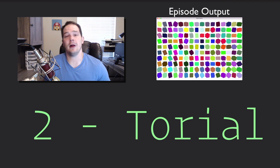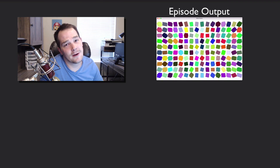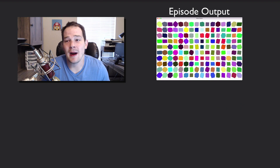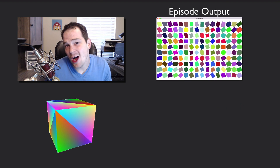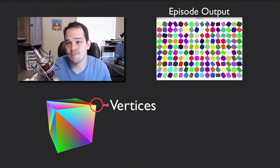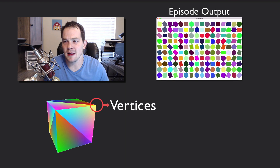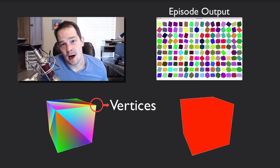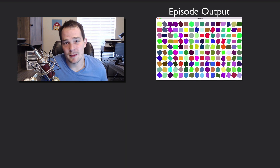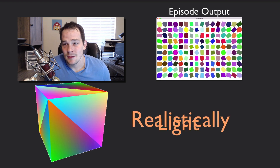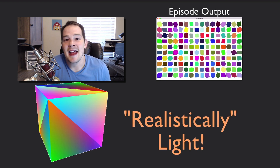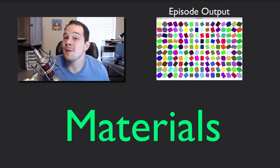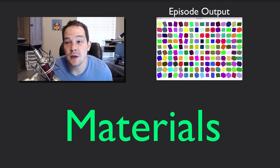Hello world, welcome back to another tutorial. Today we're going to be talking about materials and how materials apply to three-dimensional objects. Right now we're using vertex colors on our vertices to color our object, but what if we just want to make it one full color? This is going to lead us into cool episodes like how to realistically light a 3D object in space, and in order to do that we need materials.